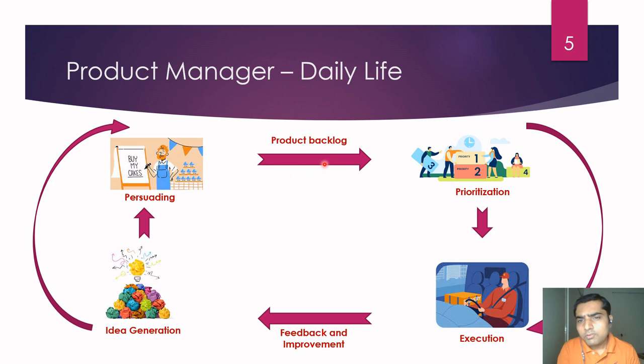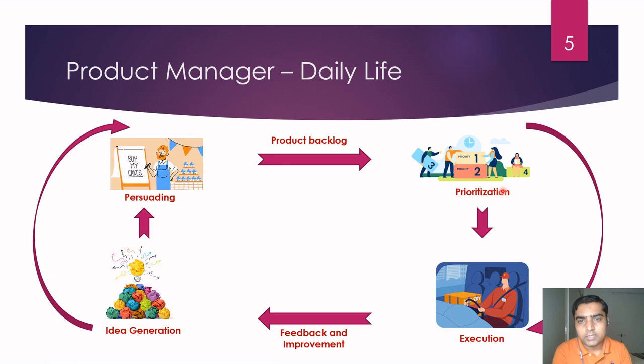We refine the product backlog and define our quarter plan, annual plan, or sprint plan. We don't take all items immediately — we assess what is low-hanging and gives higher value to the customer, which can be taken into the immediate sprint. We also check what backlog is coming from the previous sprint and whether there are customer commitments already made. Considering all these factors, once prioritization is done and sprint plans are defined, we prepare all documentation.